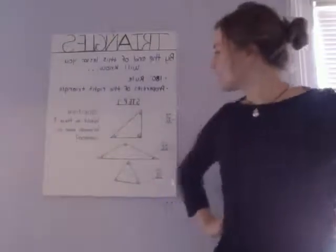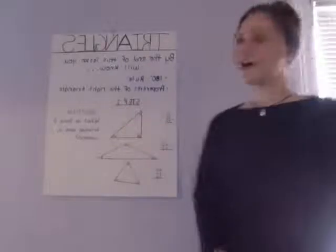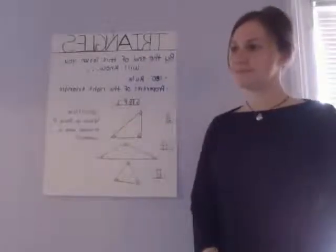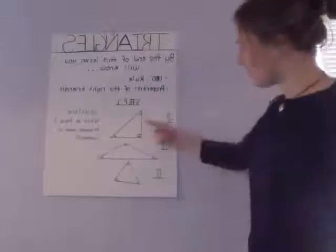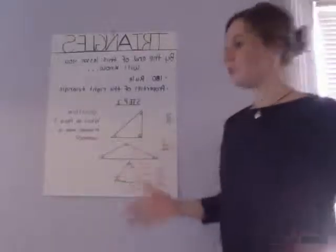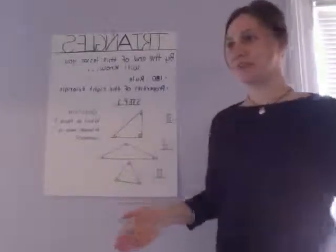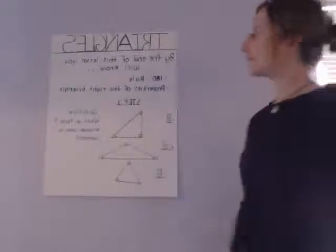So, can you tell me what these three triangles have in common? They all seem to add up to 180 degrees. Good. So, although they look different, all triangles will add up to 180 degrees. That is called the 180 degree rule.